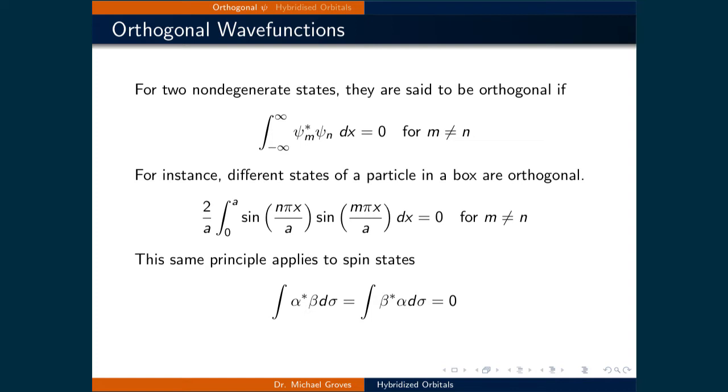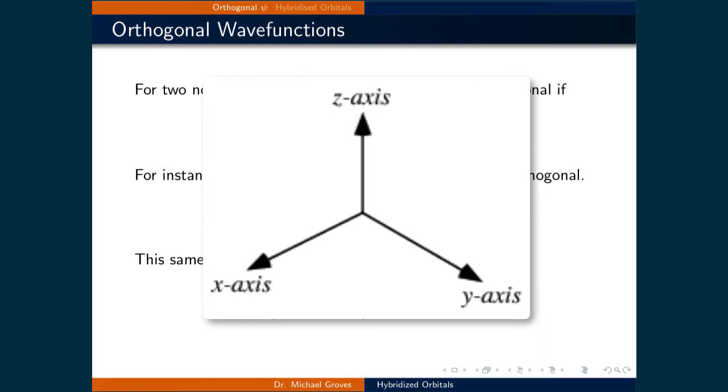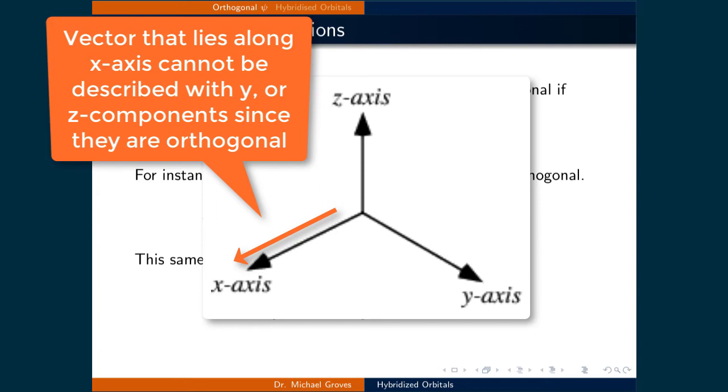Orthogonality is a comparator between two things where if the two things are orthogonal, one cannot be used to quantify the other. For example, in Cartesian coordinates where we have an x, y, and z direction, each of these directions are orthogonal to each other given that something that lies along one coordinate cannot be quantified at all by the other two.